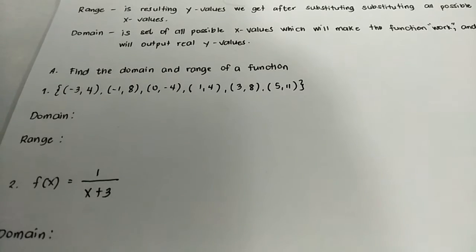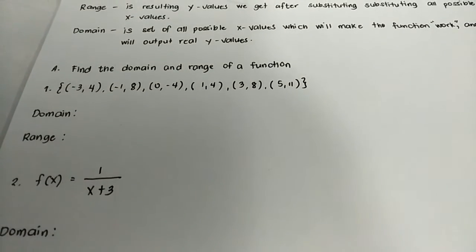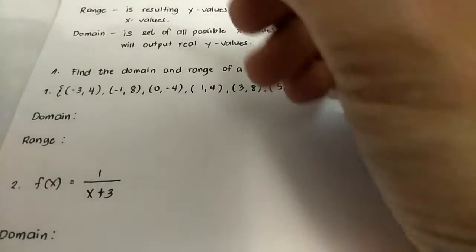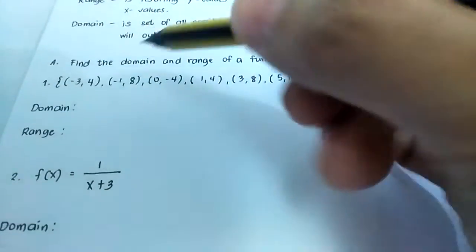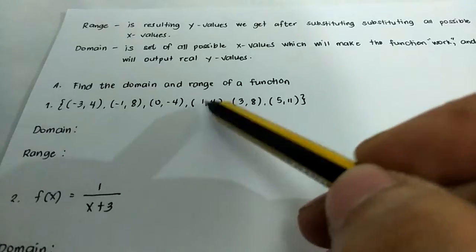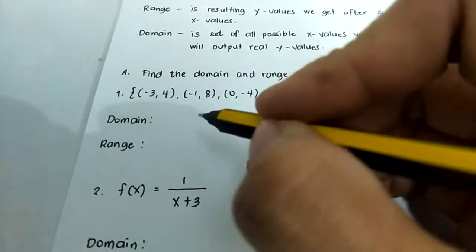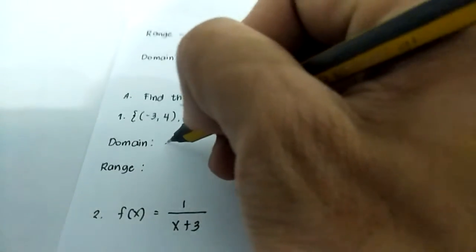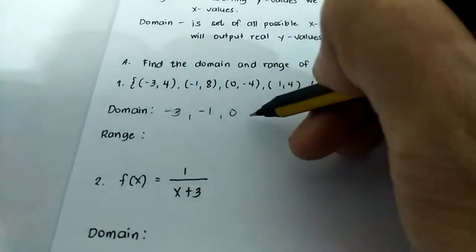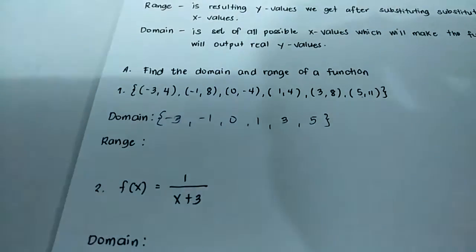This is a quick way of determining the domain and range. Domain is the x-values and range is the y-values of all points. So our domain here — all x-values — we have negative three, negative one, zero, one, three, and five.